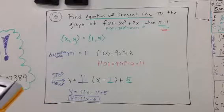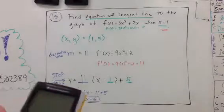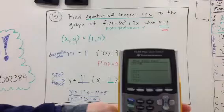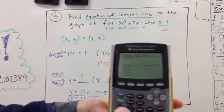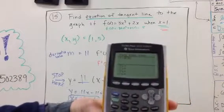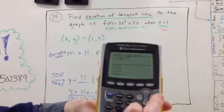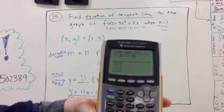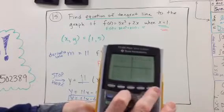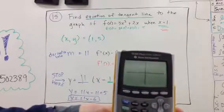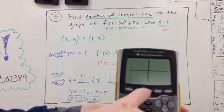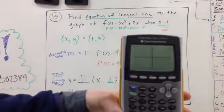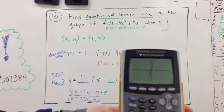If we go to our y equals, and in our y equals, if we put in the function 3x³ + 2x, there's that function. Let's just zoom standard so we can see it better. There we go. There's our function.